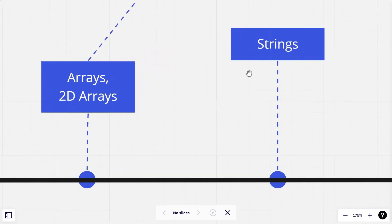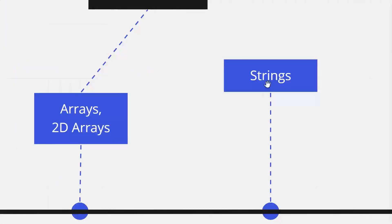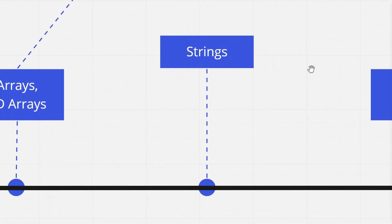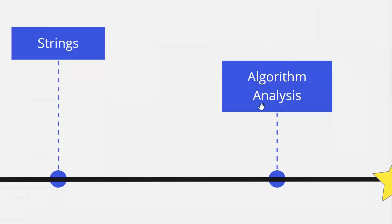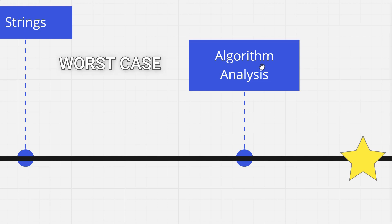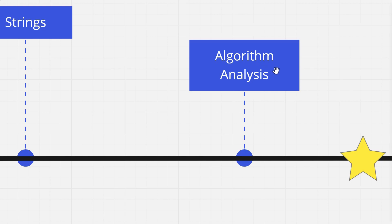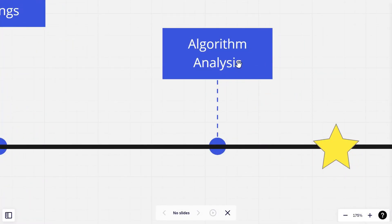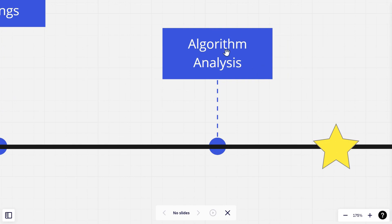After arrays we will learn about strings in detail. Then we will do analysis of algorithms — understanding the space and time complexity of an algorithm. We will talk about worst case, best case, and average case time complexities, and Big O notation. After all this, there is a checkpoint — it means you are now comfortable with programming.